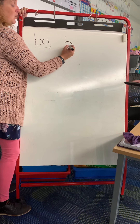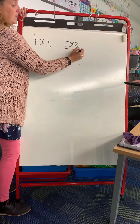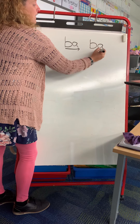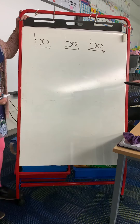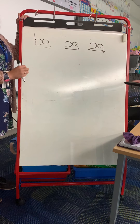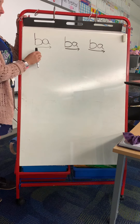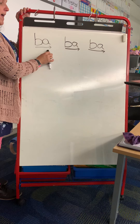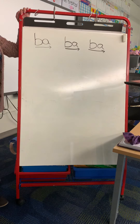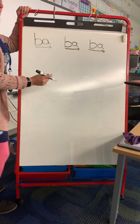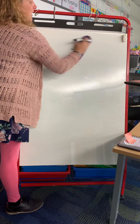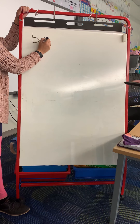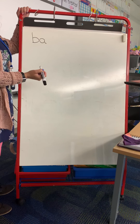I want you to write three bah slides. Don't forget your arrow afterwards — first you write B, next you write A, last you write the arrow. Don't make your arrow first, make your arrow last. First the B, then the A, last is the arrow slide. We're not going to say the names of the letters because now we have sounds, so we're just going to read the sounds. Bah, bah, bah.